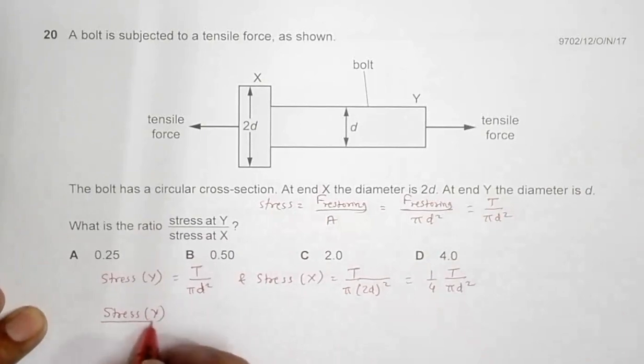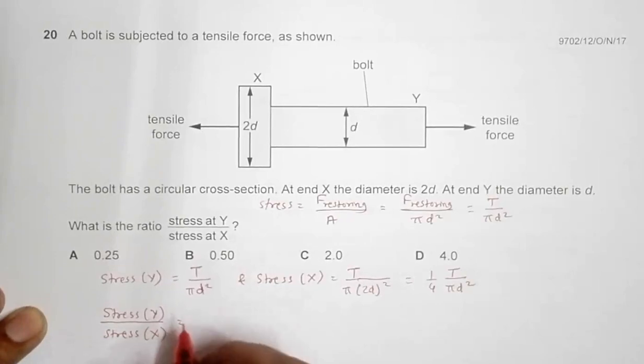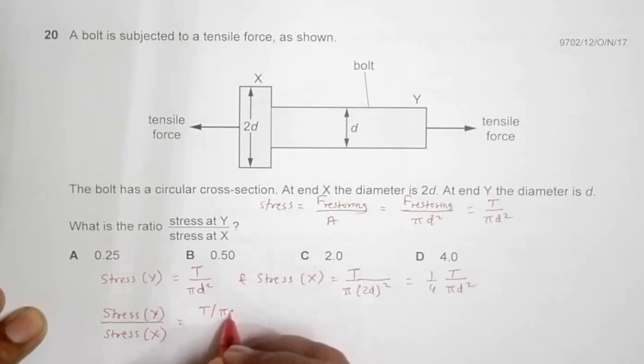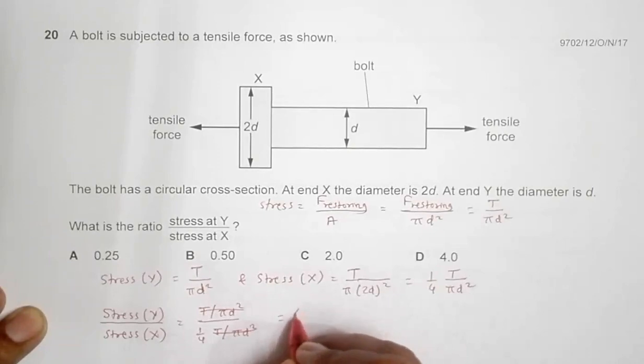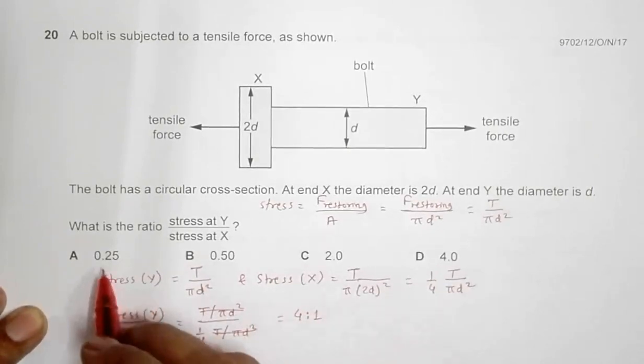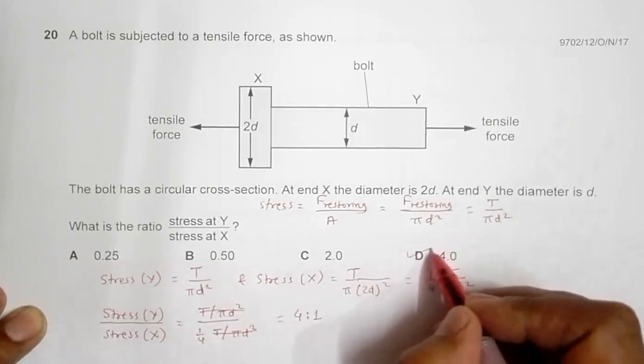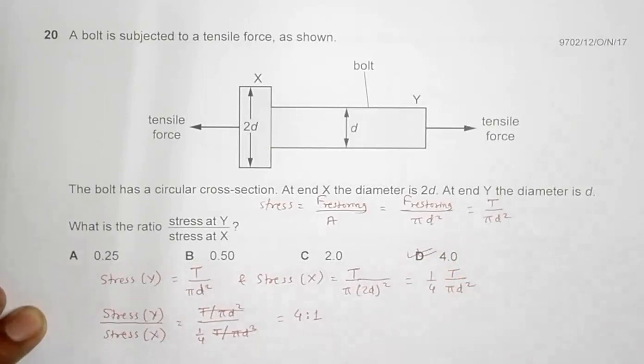This equals T by pi d squared divided by 1 by 4, then T by pi D squared. So if you cancel these terms, it will be 4. So the ratio that matters is 4.0 to 1, so answer D should be the correct answer.